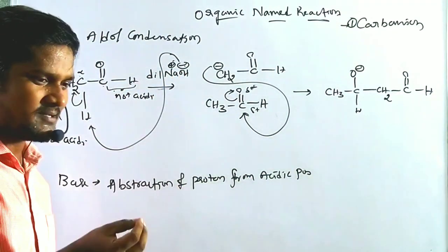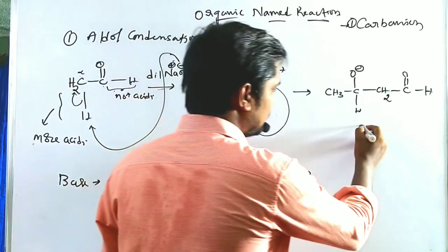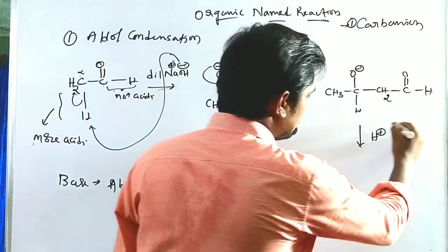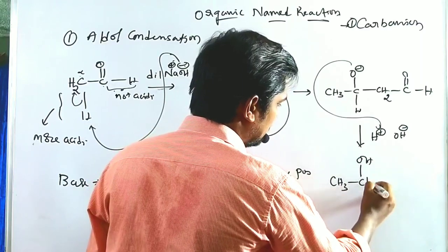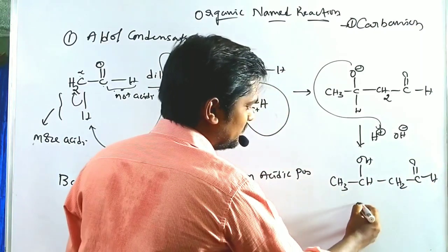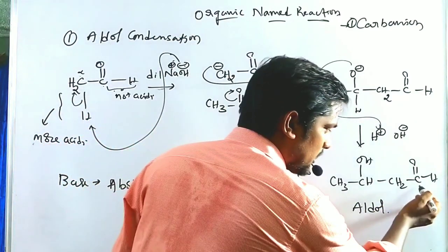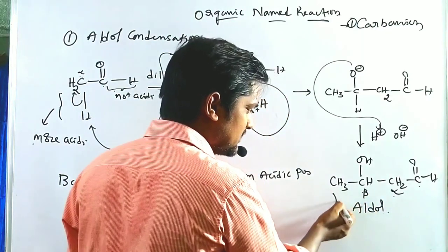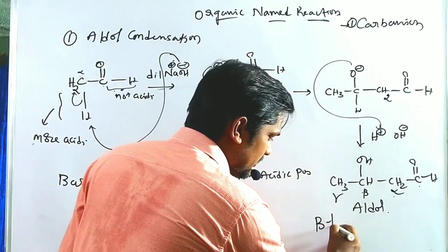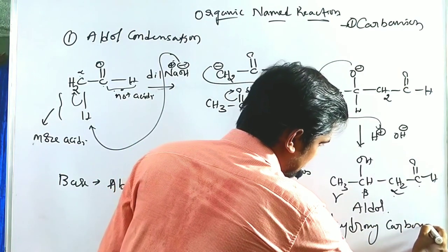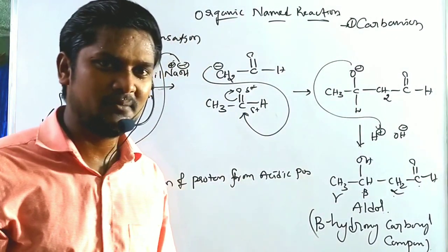We used diluted NaOH — NaOH pellets dissolved in water — so the reaction proceeds in aqueous medium, providing water molecules (H⁺ and OH⁻). The O⁻ abstracts a proton from water, becoming OH, giving us CH3CH(OH)–CH2–C=O. This product is called the aldol. It is also known as a beta-hydroxy carbonyl compound, because the hydroxyl group is at the beta position relative to the carbonyl.